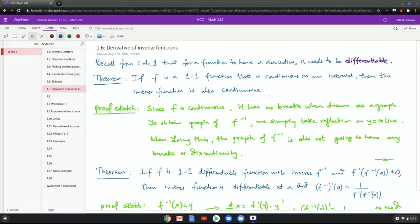Rough sketch of the proof: we know if it's continuous it means it has no breaks when you draw it as a graph. Now we just learned previously that to obtain the graph of f inverse from f, we simply take your reflection on the y equals x line.